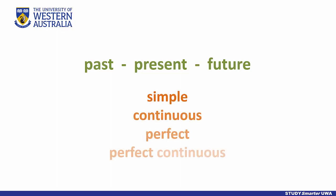Tenses come in aspects: simple, continuous (which is sometimes called progressive), perfect, and perfect continuous or perfect progressive, depending on whether they refer to actions that are stable, in progress, already complete, or expecting an outcome.